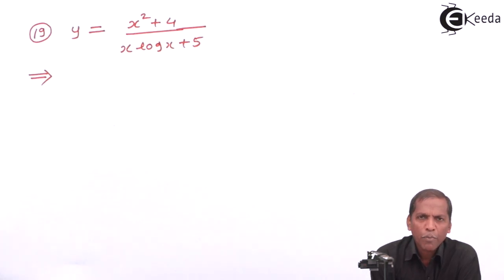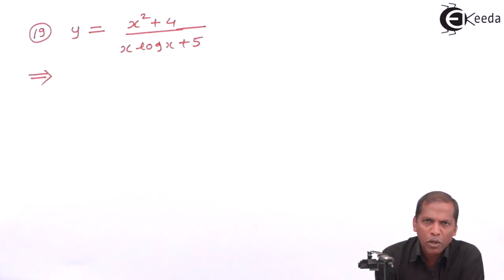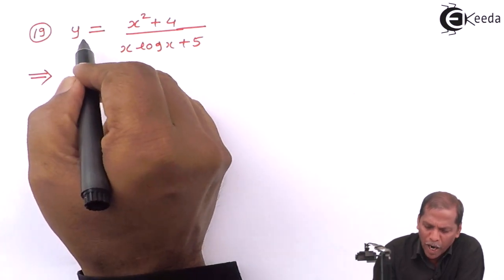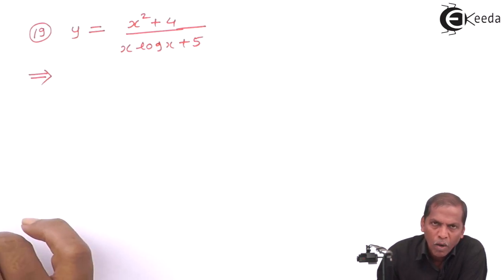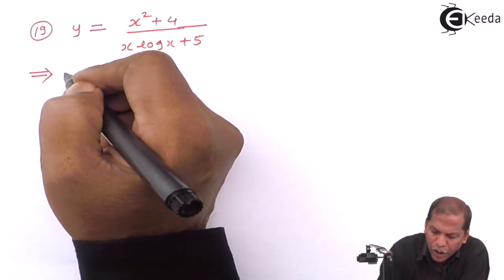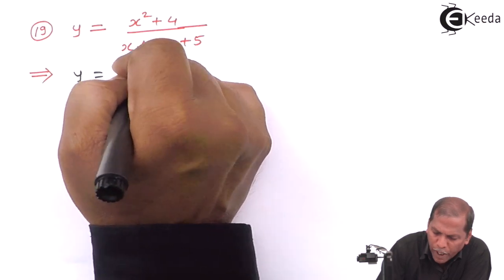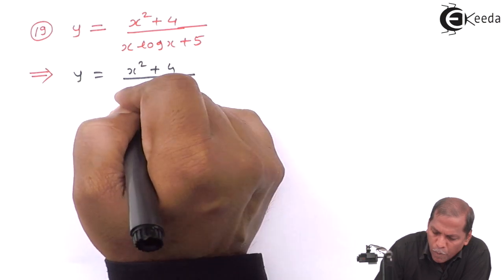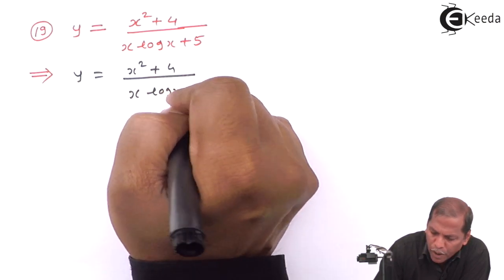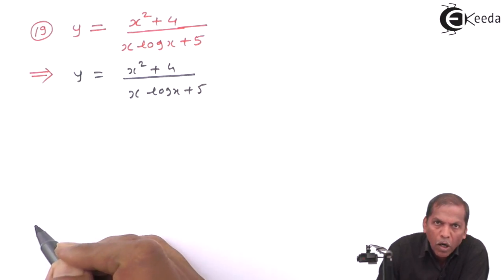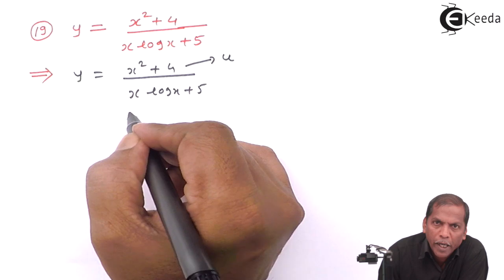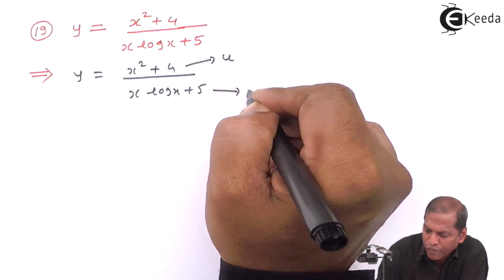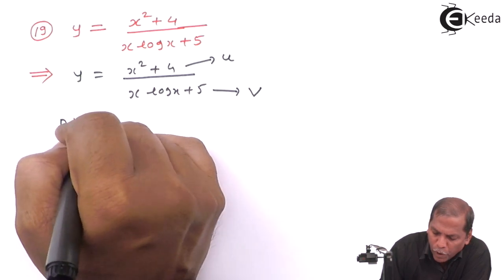Hello friends, now we see problem number 19, which is also based on rules of differentiation from the chapter on differentiation. The problem number 19 is: y equals (x squared plus 4) upon (x into log x plus 5). Let's see the solution. We start with y equal to (x squared plus 4) upon (x into log x plus 5). Here, x squared plus 4 we consider as u, and x into log x plus 5 we consider as v. Differentiating with respect to x, we get: